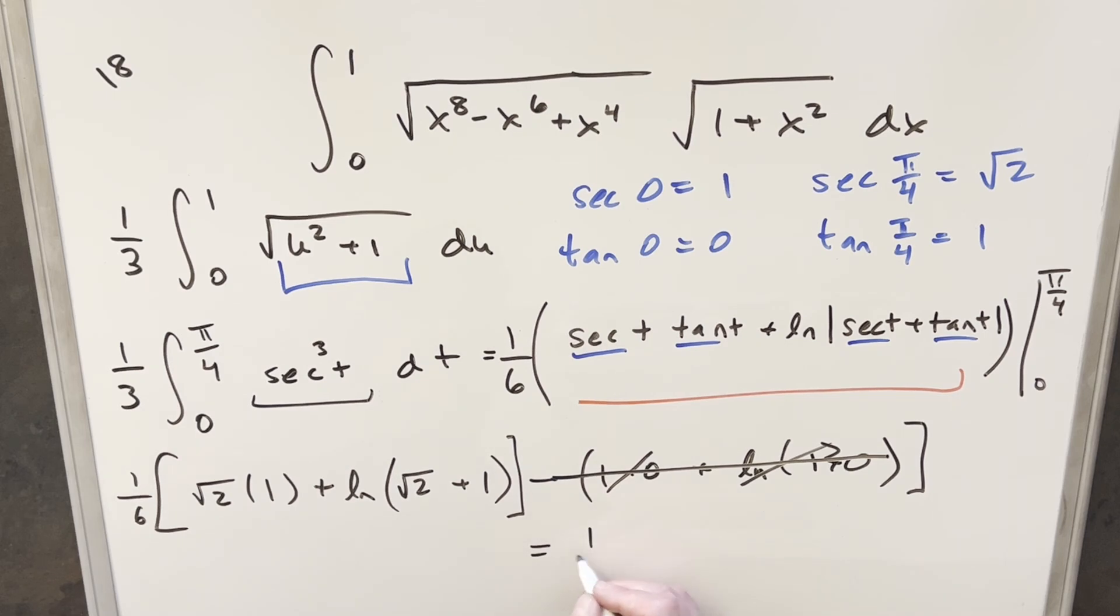So putting this together for my final solution on this, we have 1 over 6 times square root of 2 plus natural log square root of 2 plus 1. Add a parenthesis, and that's it.